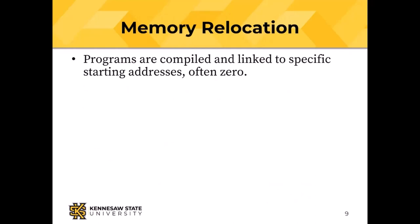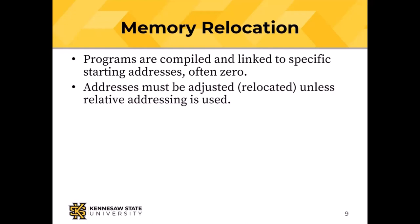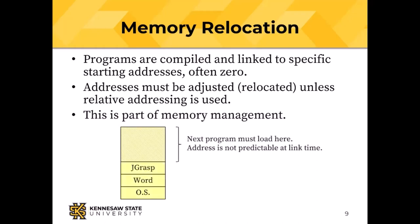All of that's going to go away when we do virtual memory. Modern operating systems almost all do virtual memory, with the exception of things like camera operating systems or Internet of Things operating systems. Programs are compiled and linked to specific starting addresses — often that starting address is zero — and so the addresses in the program have to be relocated, adjusted to match the location where the program is actually loaded. That is part of memory management, and that address is not predictable when the program is compiled and linked.